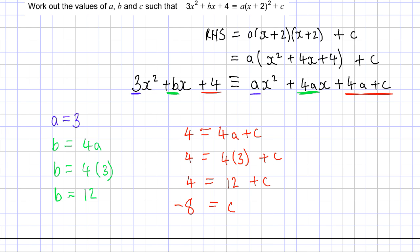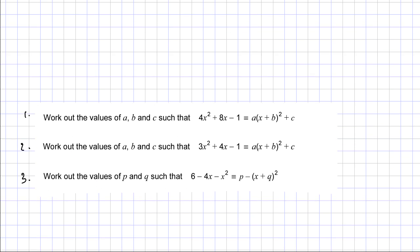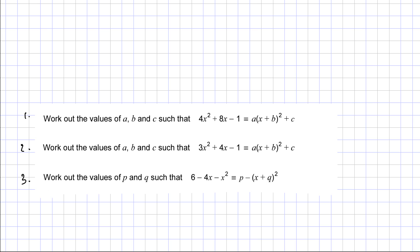So the answers are: a is equal to 3, b is equal to 12, and c is equal to minus 8. Now here are some questions for you to try. Find the values of a, b and c in the first two questions, and find p and q in the third. Find those values and bring them to the lesson.